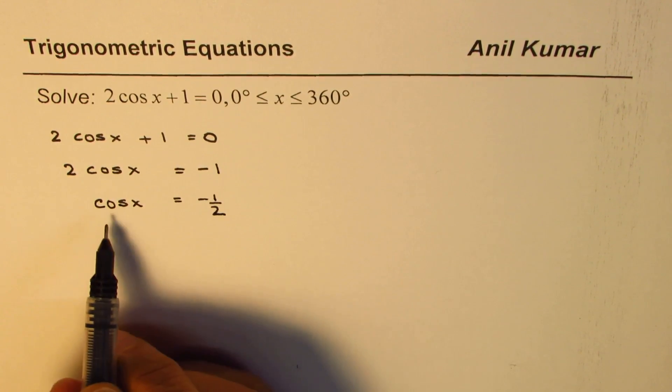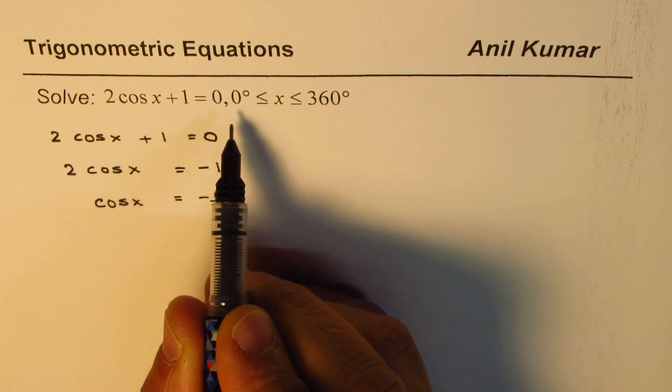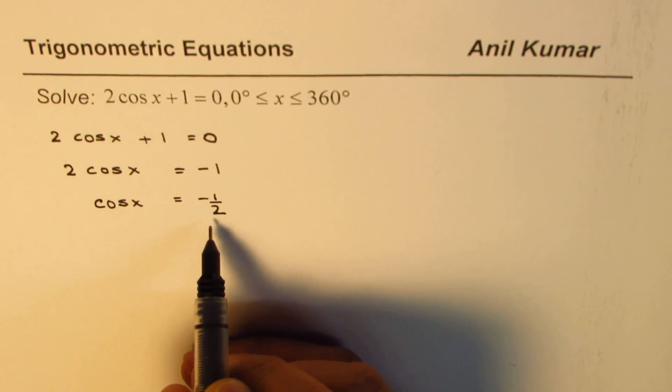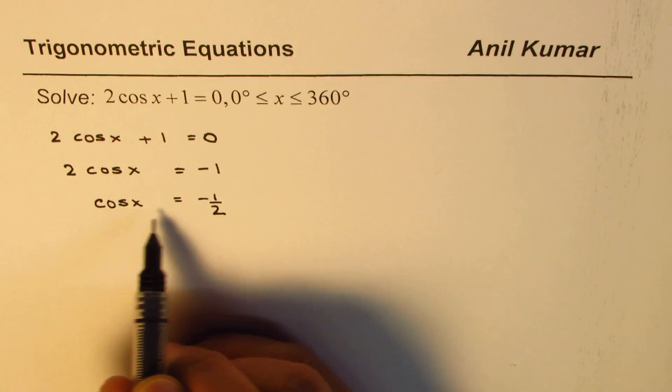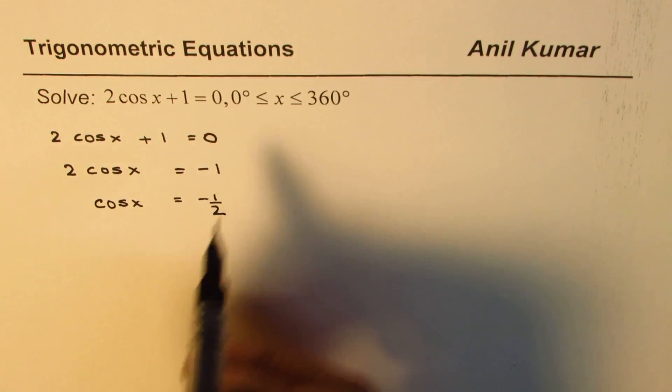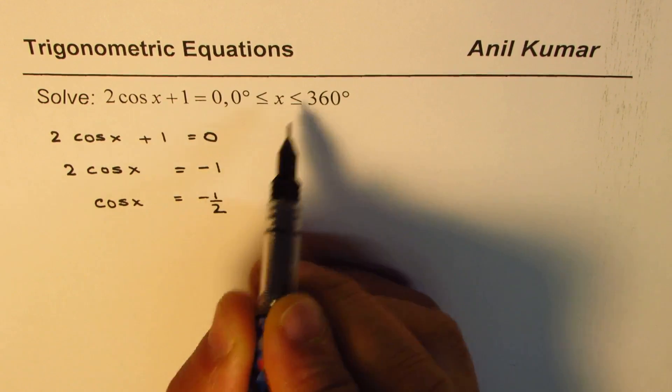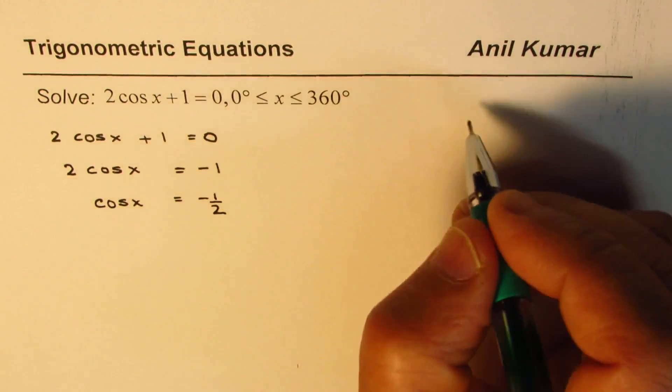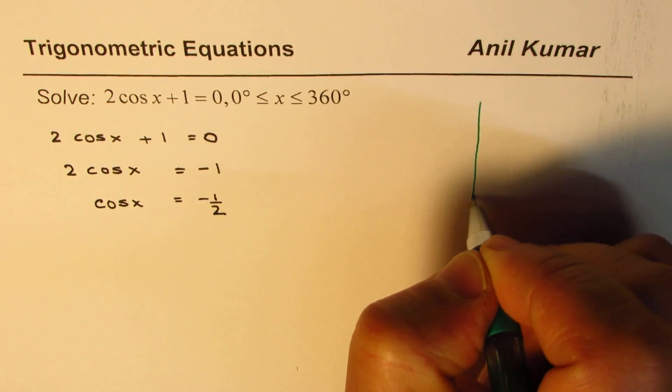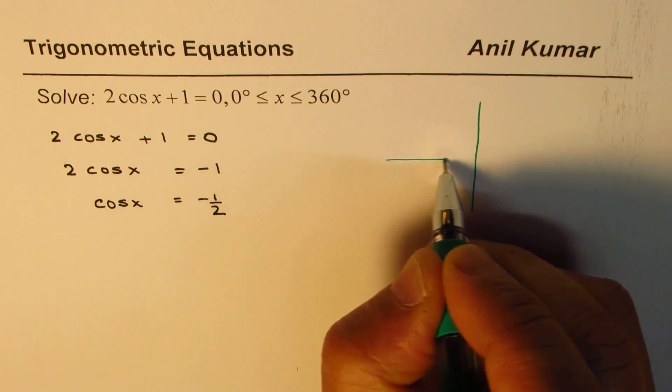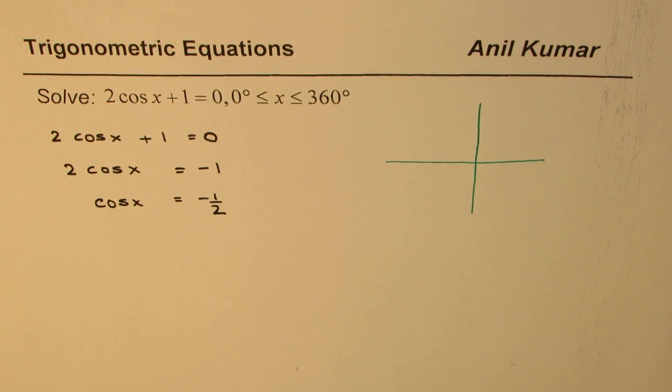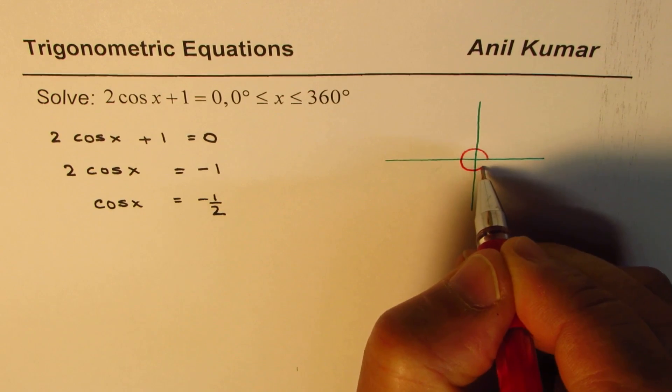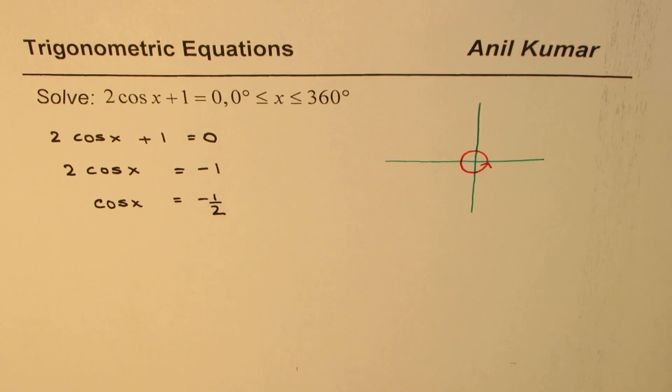Now to provide the solution we have to always look into the given domain. We need to write all the solutions for cos x equals minus half when x is between 0 to 360 degrees. Now 0 to 360 degrees means what? Let's look into the coordinate plane. So when we are saying 0 to 360 degrees it means one full circle.